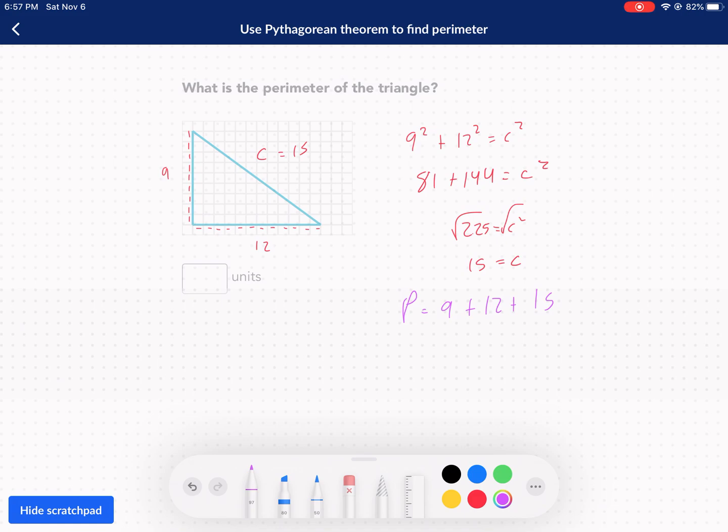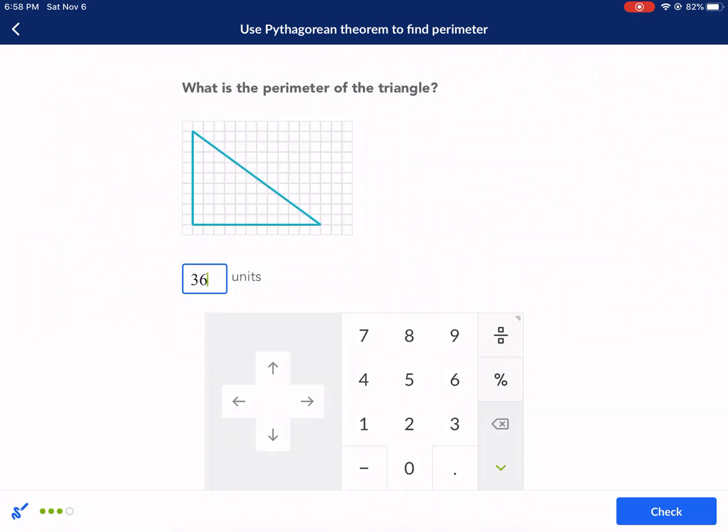I know that's 21 plus 15. That gives us 36 again. Just wanted to double check. I hate getting these wrong.